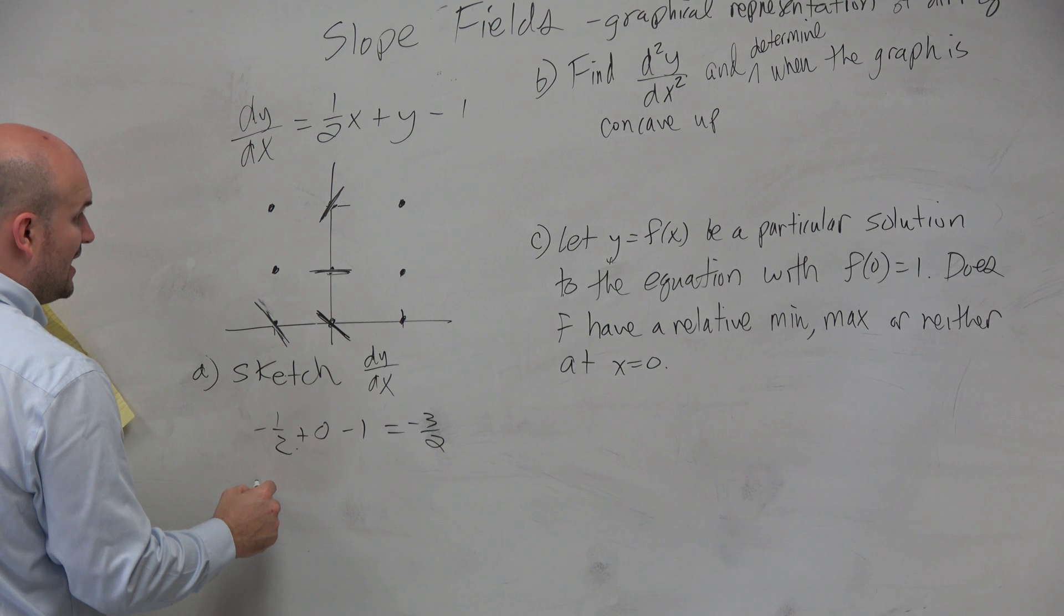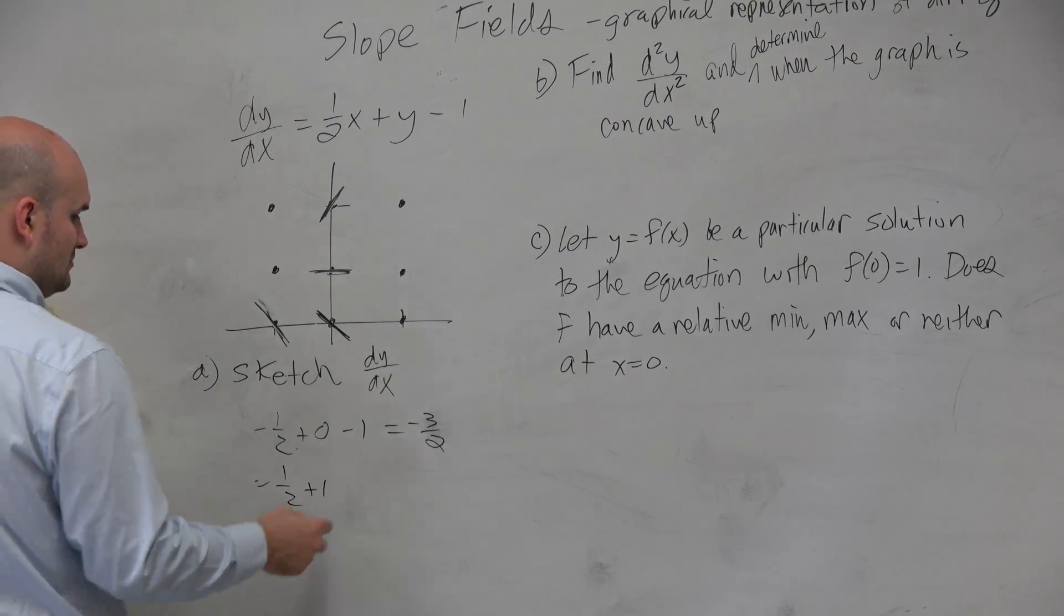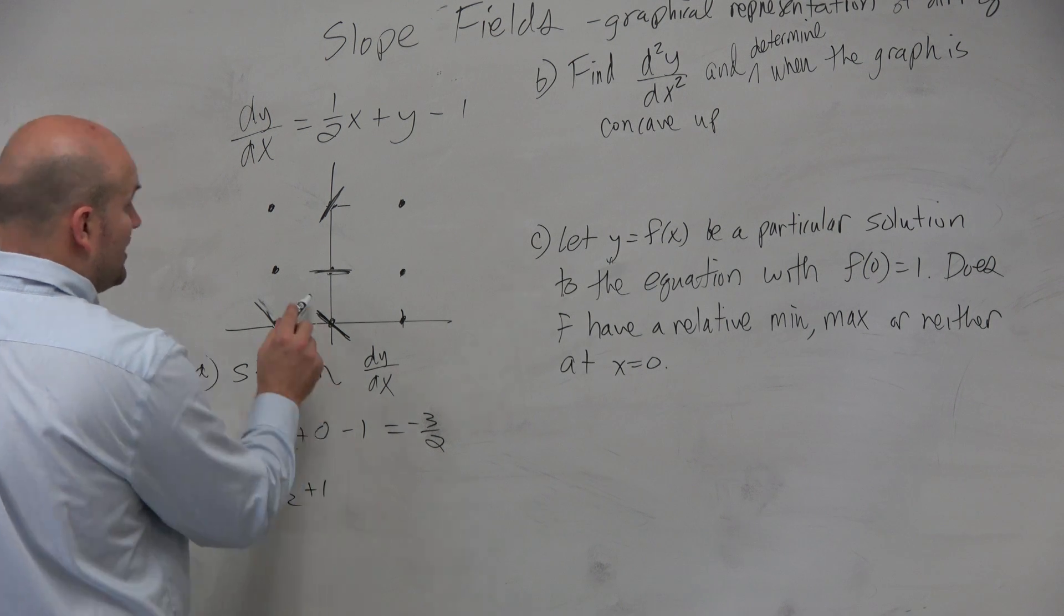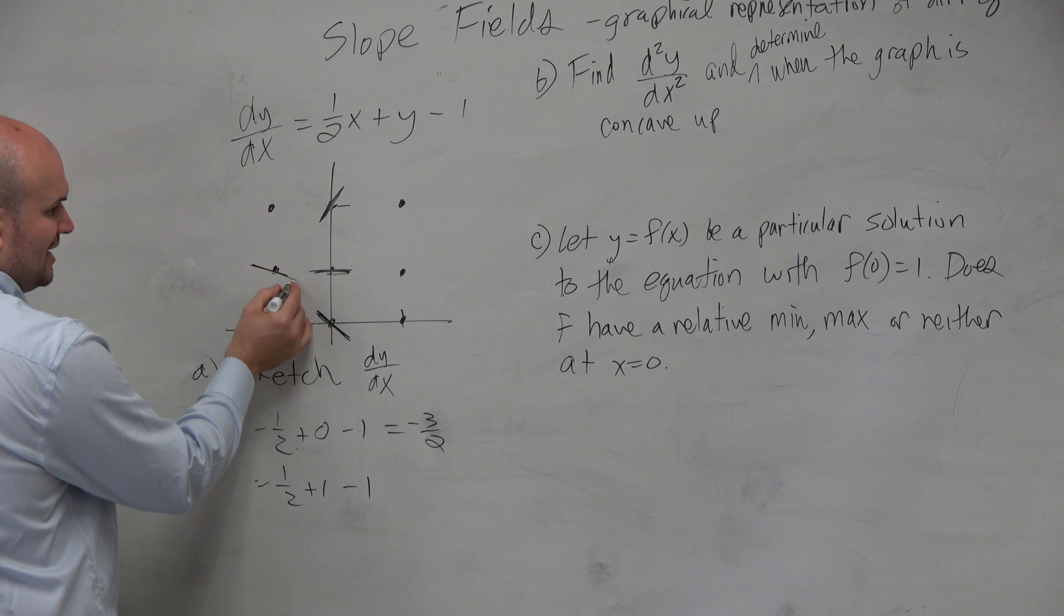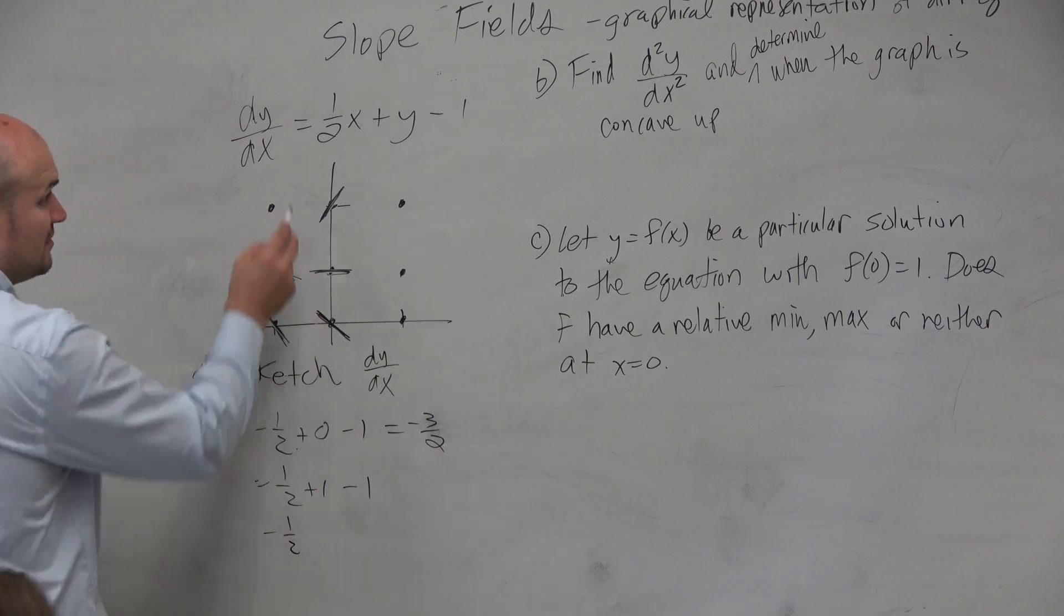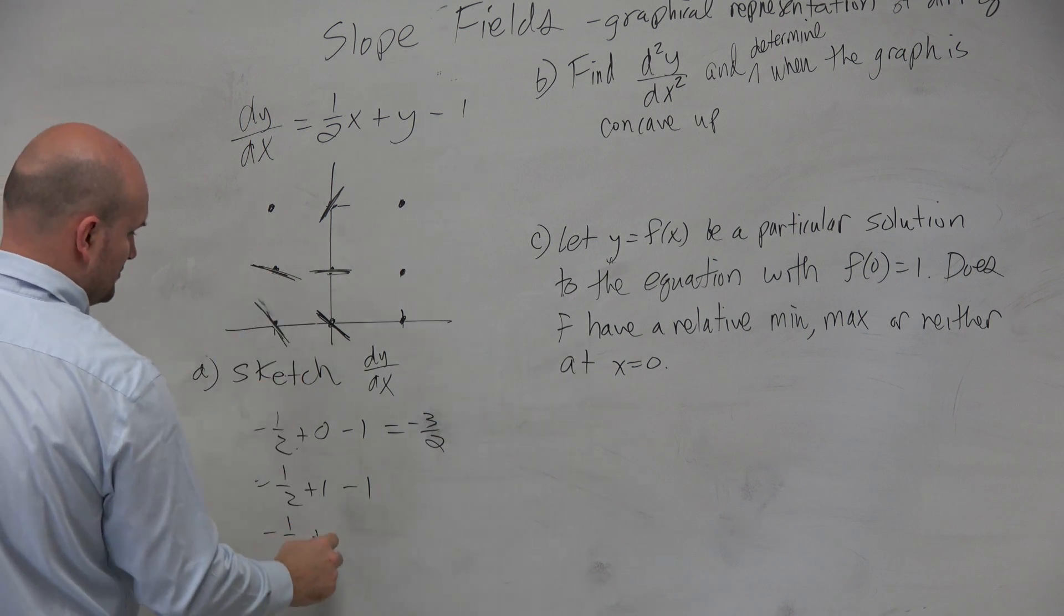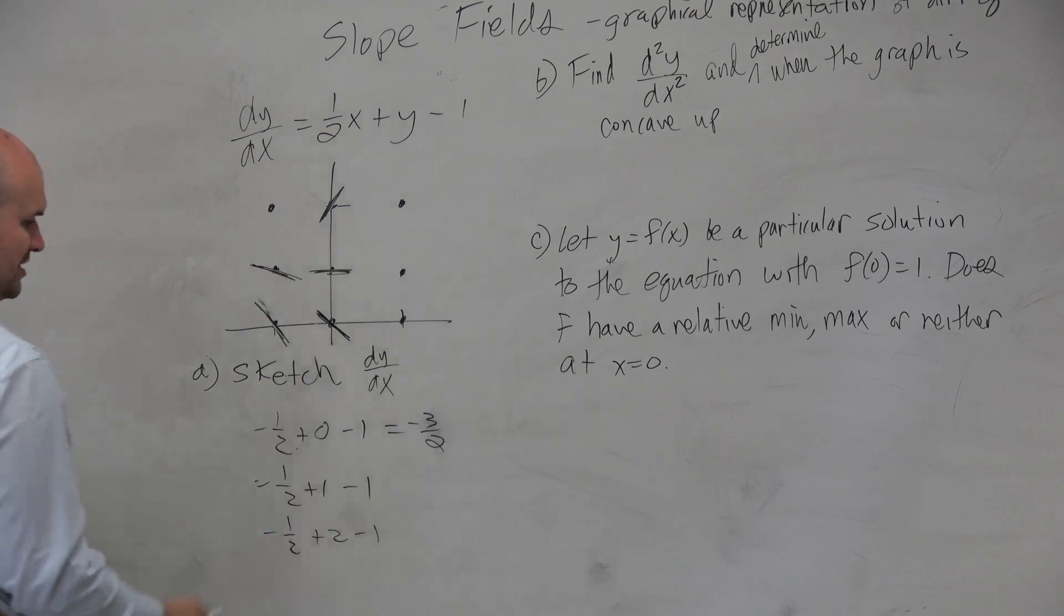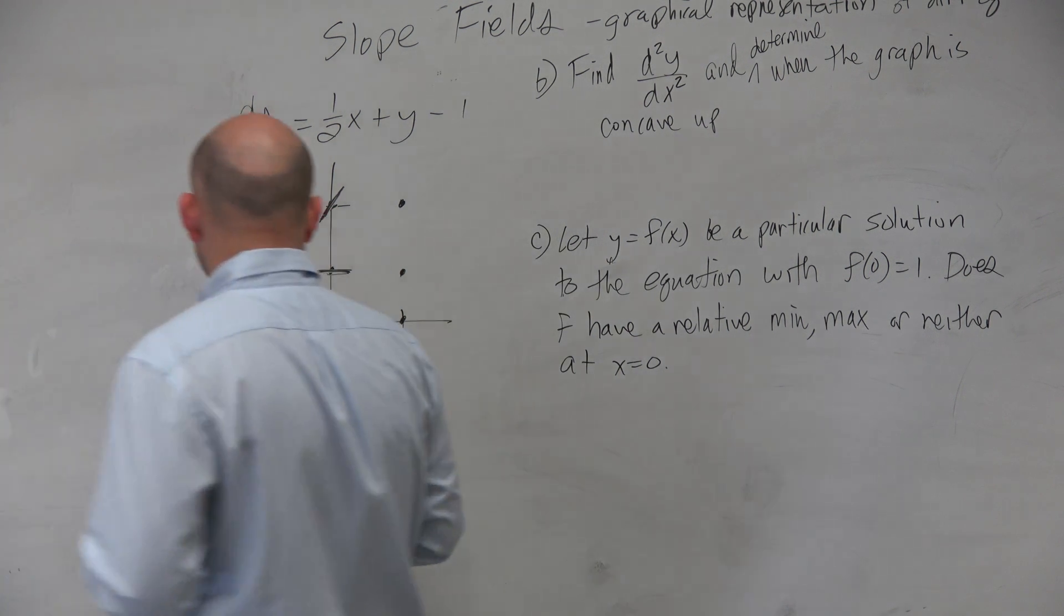And then this would be a negative 1 half and then plus 1 and then minus 1. So that's like a negative 1 half, so that's a little bit less. And then we could do this one. It would be a negative 1 half, negative 1 half. And then let's see, plus 2 minus 1. So it's really plus 1, which is going to be a positive 1 half. It kind of looks like that.